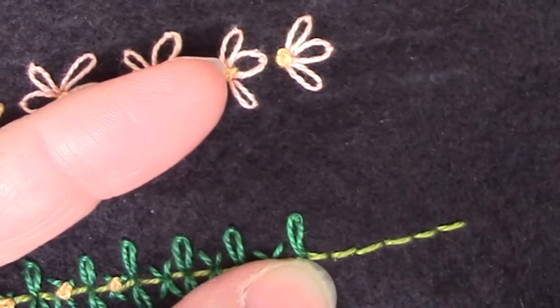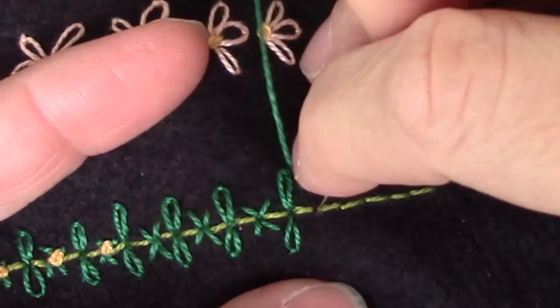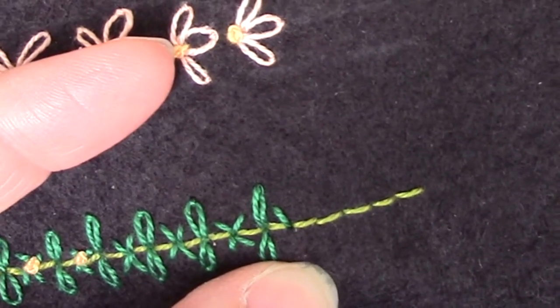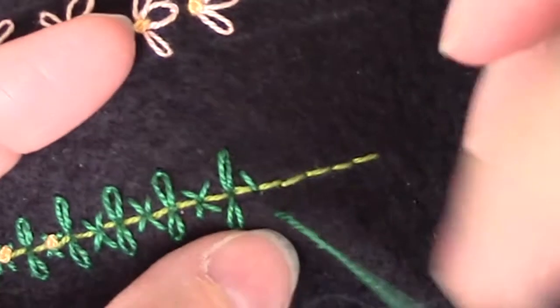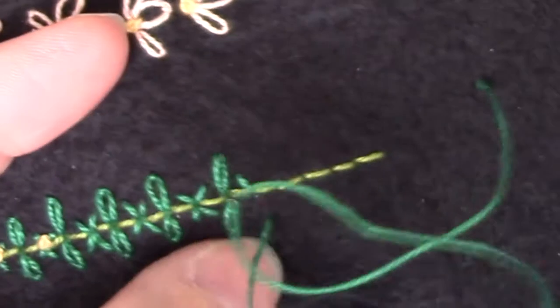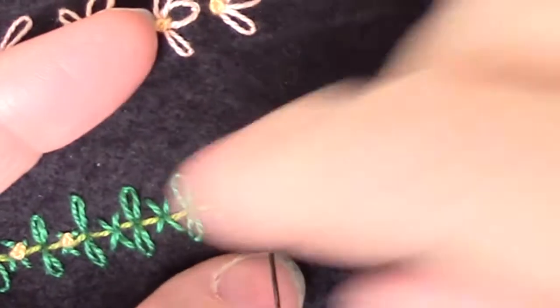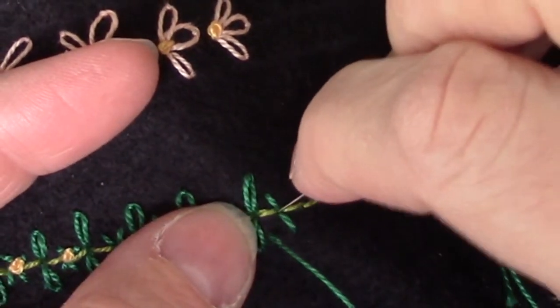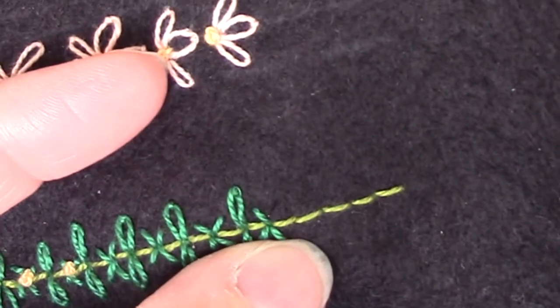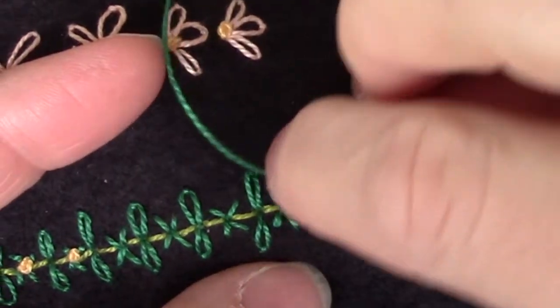So once more, my straight stitches, four of them. And there's no magical order to these. If you prefer to go across from each other, that's fine. Or right next to each other, that's fine. And then again, the next one is going to be two lazy daisies. So I would just do that down the whole length of whatever I was putting this combination stitch on.